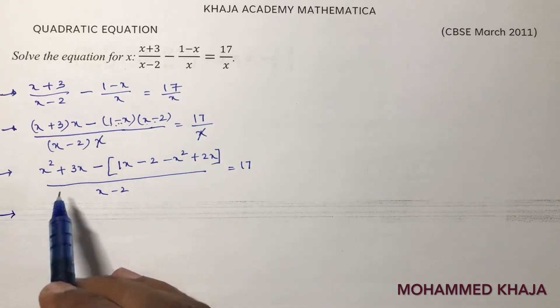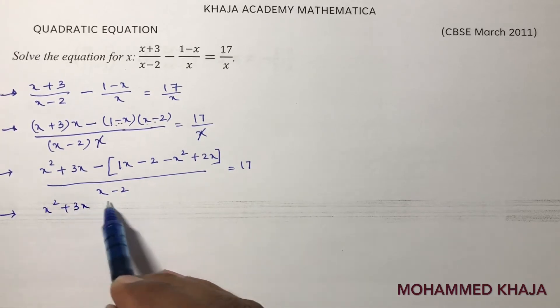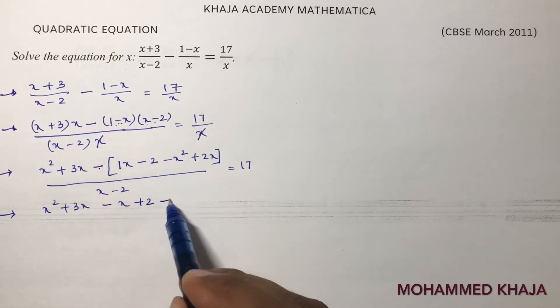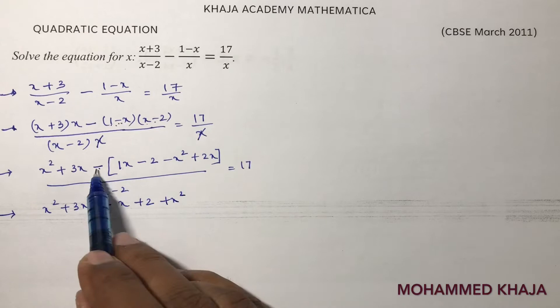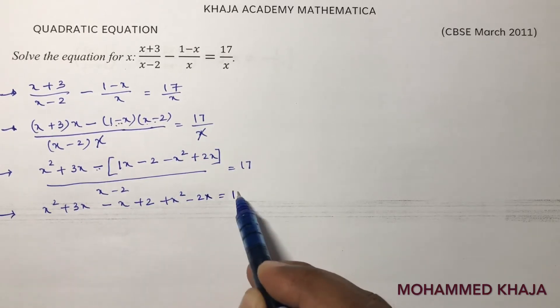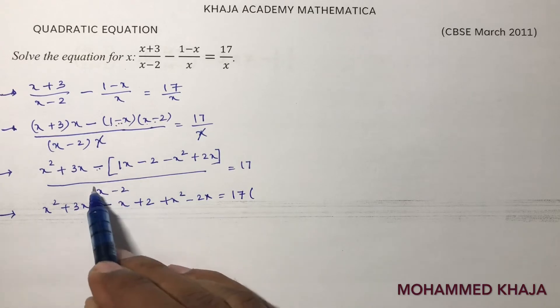So here x square plus 3x minus 3x minus x, minus into minus plus x into 2, 2x plus 2x by x minus 2 equals 17. So here x square plus 3x minus 3x minus x, minus into minus plus 2. Minus into minus plus x square. Minus into plus minus 2x equals 17 cross multiply.